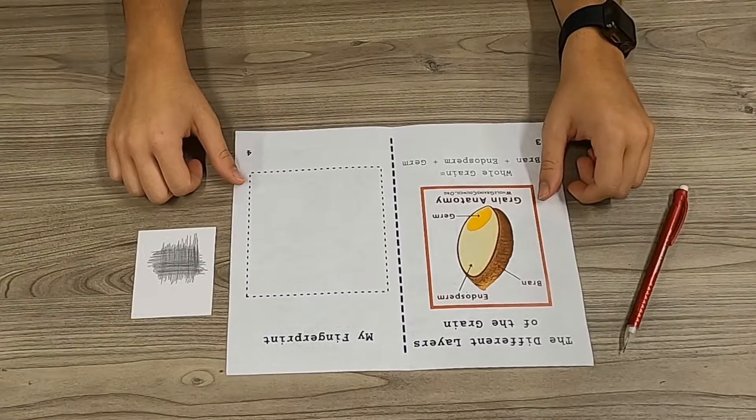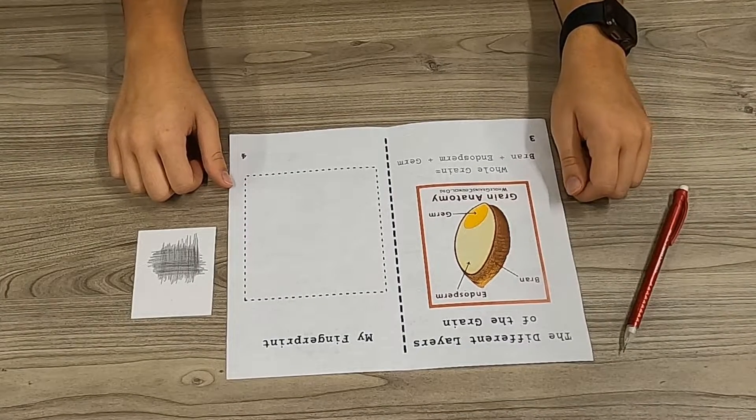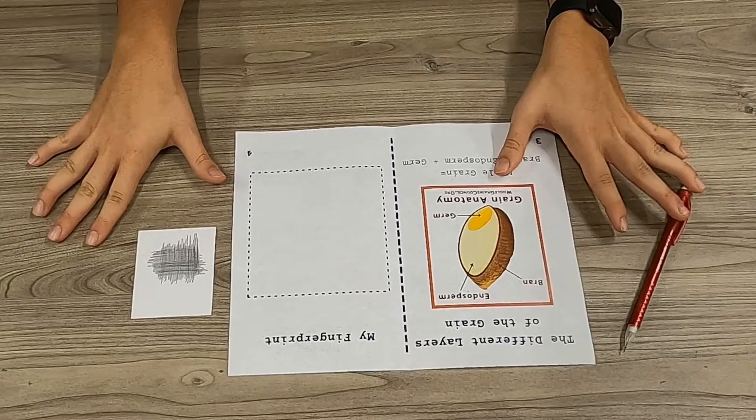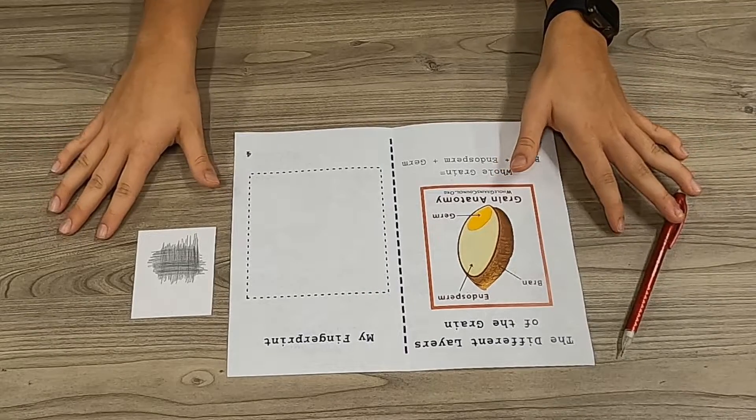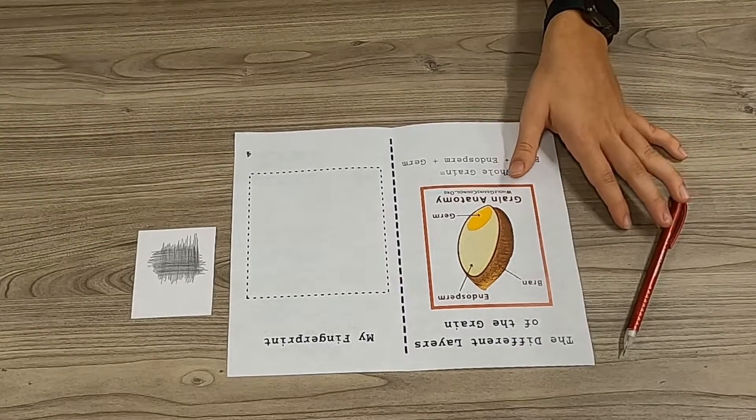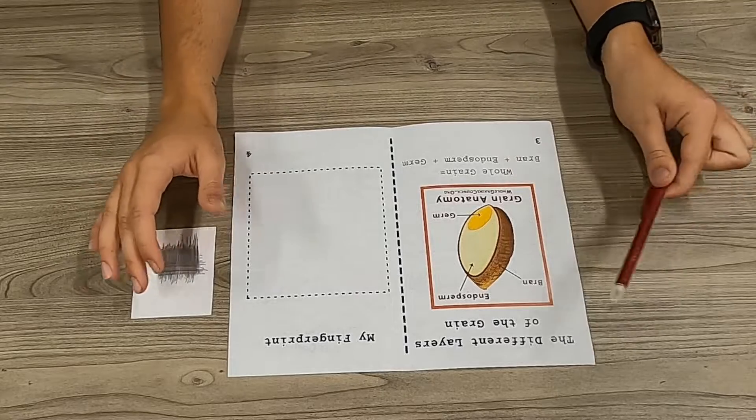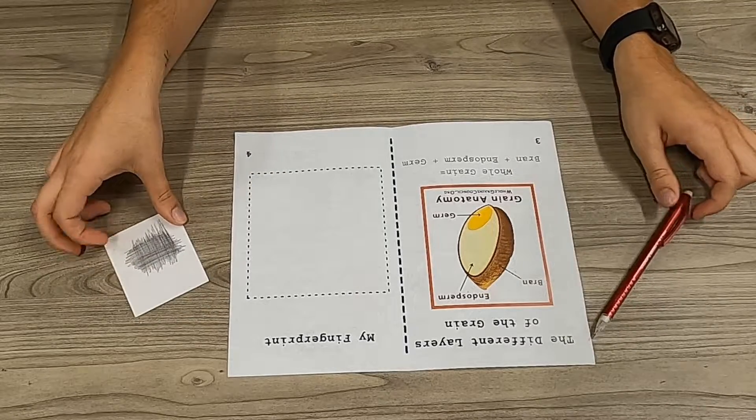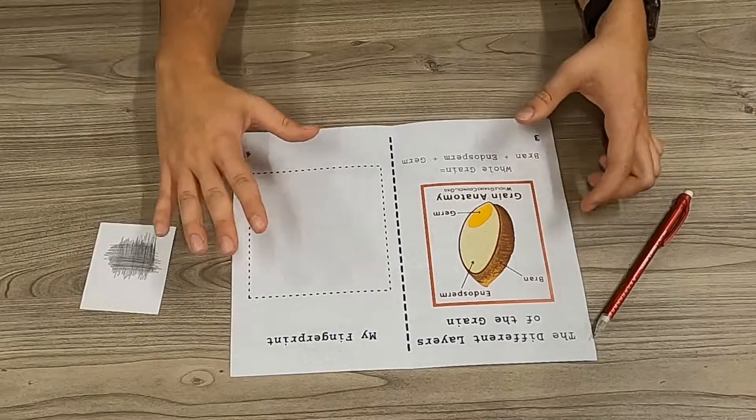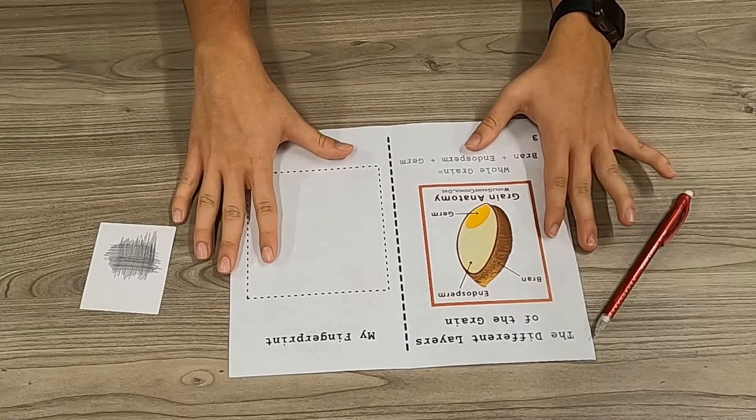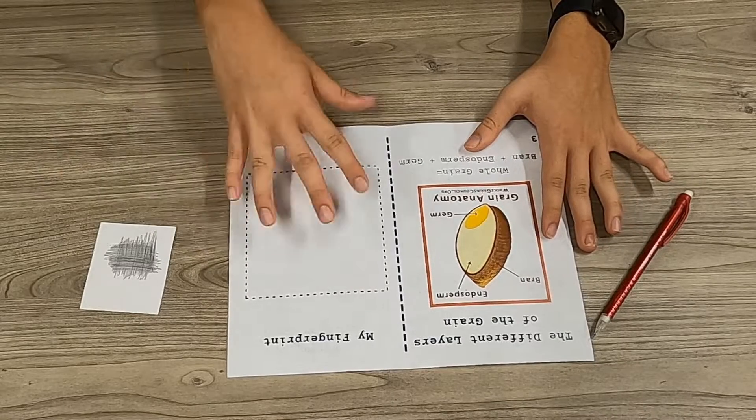In this video we're going to be learning how to take our very own fingerprint with things that you can find at home. For this activity you'll need a piece of tape, a pencil, a note card or piece of paper, and your activity guide.